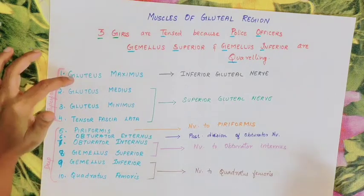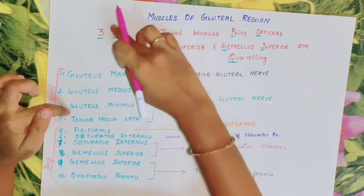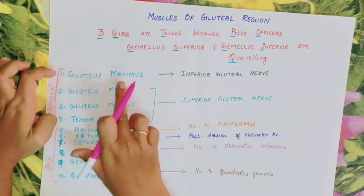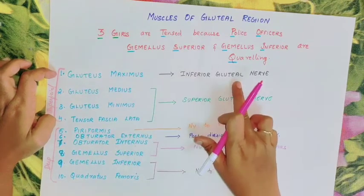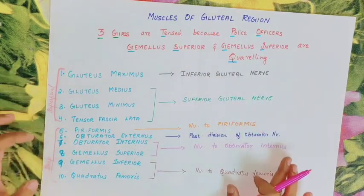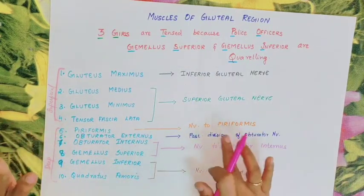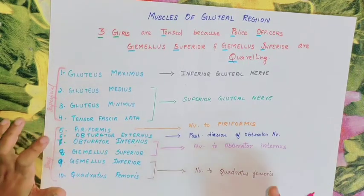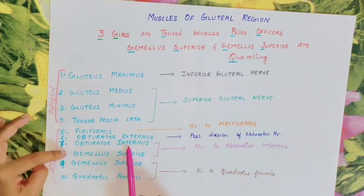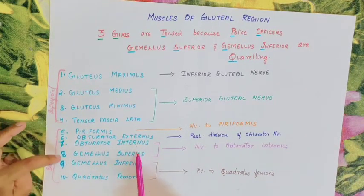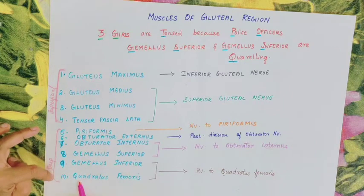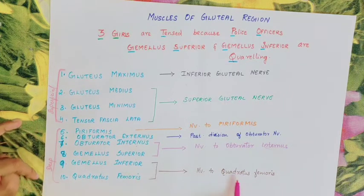To recap: Gluteus Maximus — Inferior Gluteal Nerve. Gluteus Medius, Gluteus Minimus, and Tensor Fasciae Latae — Superior Gluteal Nerve (superficial group, from the sacral plexus). Deep group: Piriformis — Nerve to Piriformis. Obturator Externus — Posterior Division of Obturator Nerve. Obturator Internus and Gemellus Superior (7th and 8th muscles) — Nerve to Obturator Internus. Gemellus Inferior and Quadratus Femoris — Nerve to Quadratus Femoris.